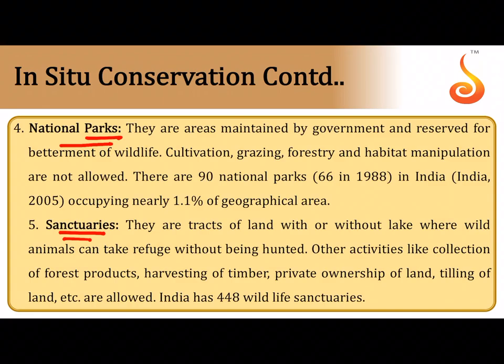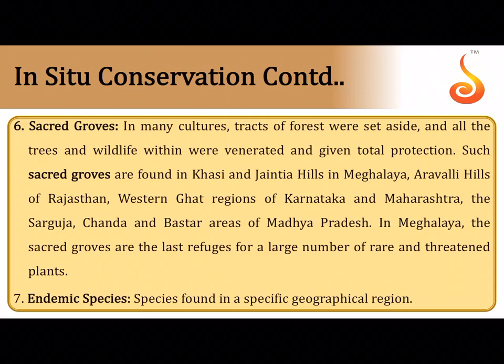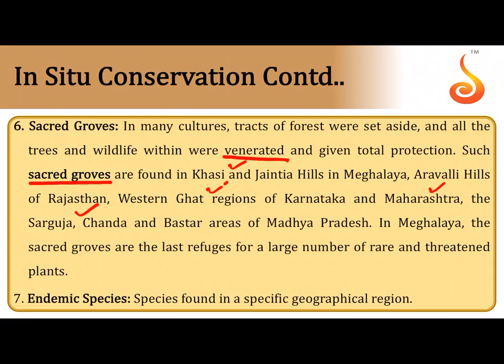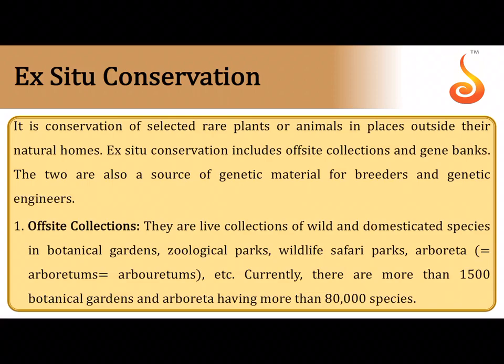National parks are for both plants and animals; sanctuaries are mostly for animals. India has about 90 national parks — 66 in 1988 — occupying nearly 1.1 percent of geographical area, and about 448 wildlife sanctuaries. Sacred groves are stretches of forest where wildlife and trees are given special protection and are venerated; examples include the Khasi and Jaintia hills of Meghalaya, Aravalli hills of Rajasthan, Western Ghats of Karnataka and Maharashtra, and areas of Madhya Pradesh.